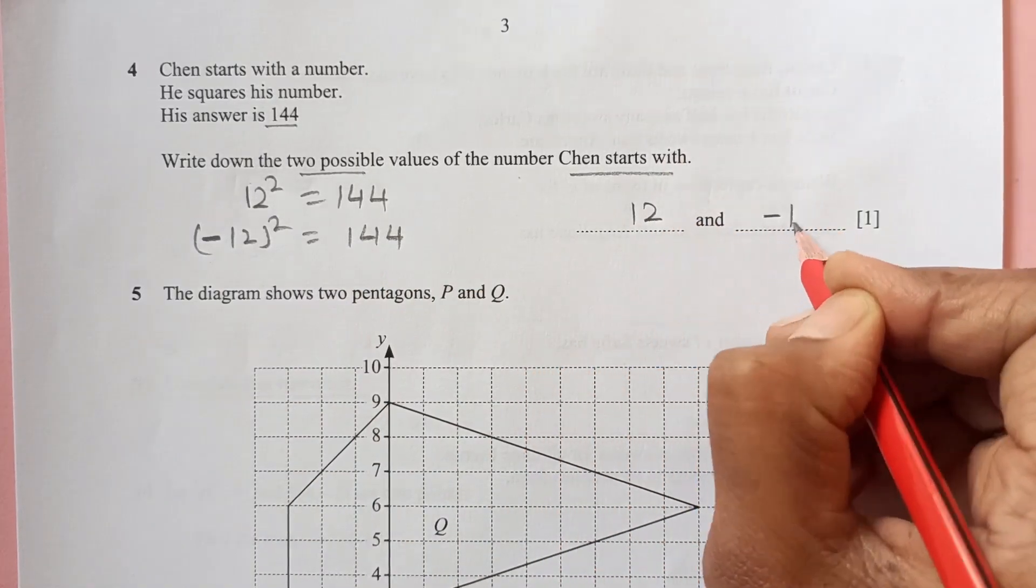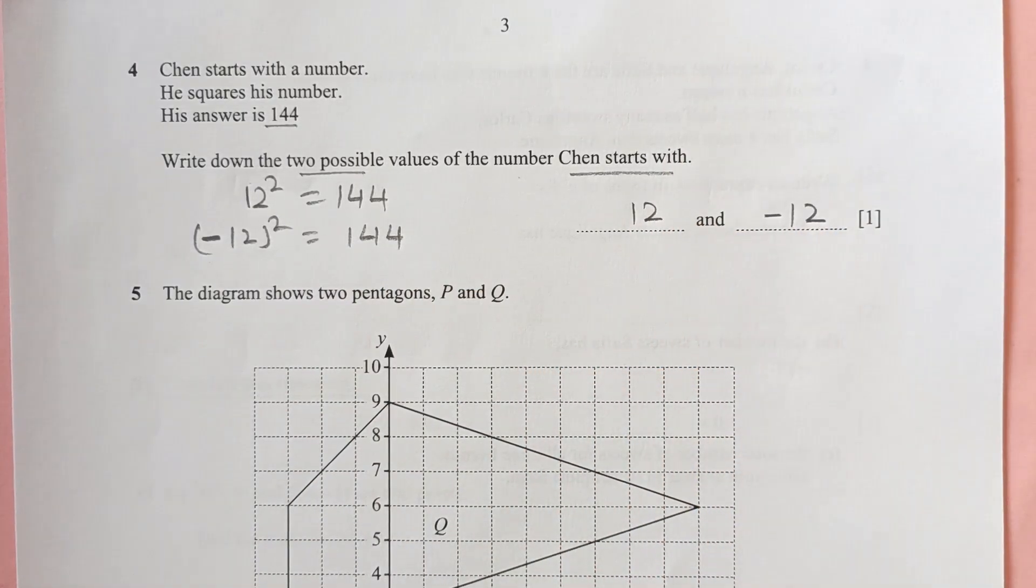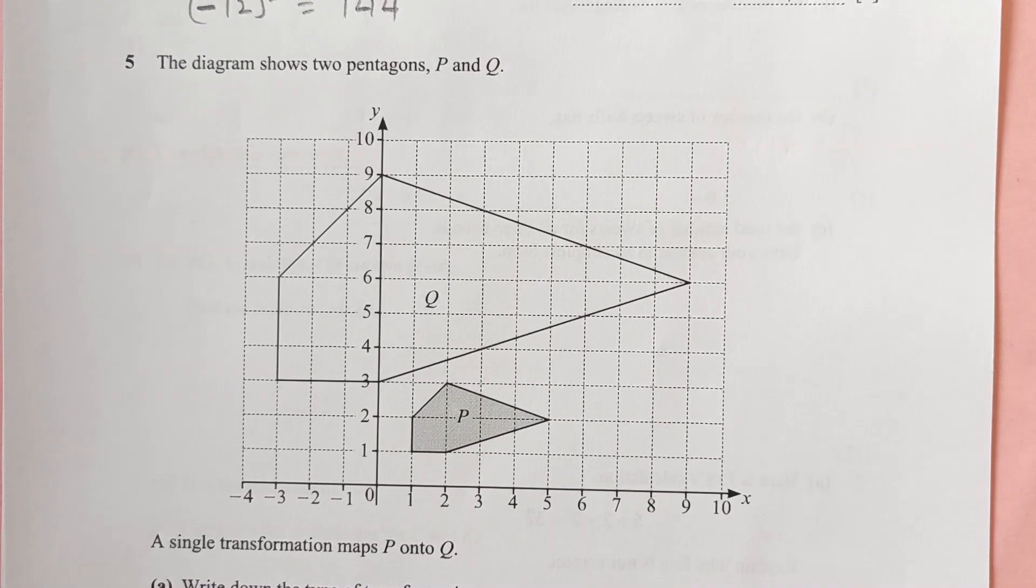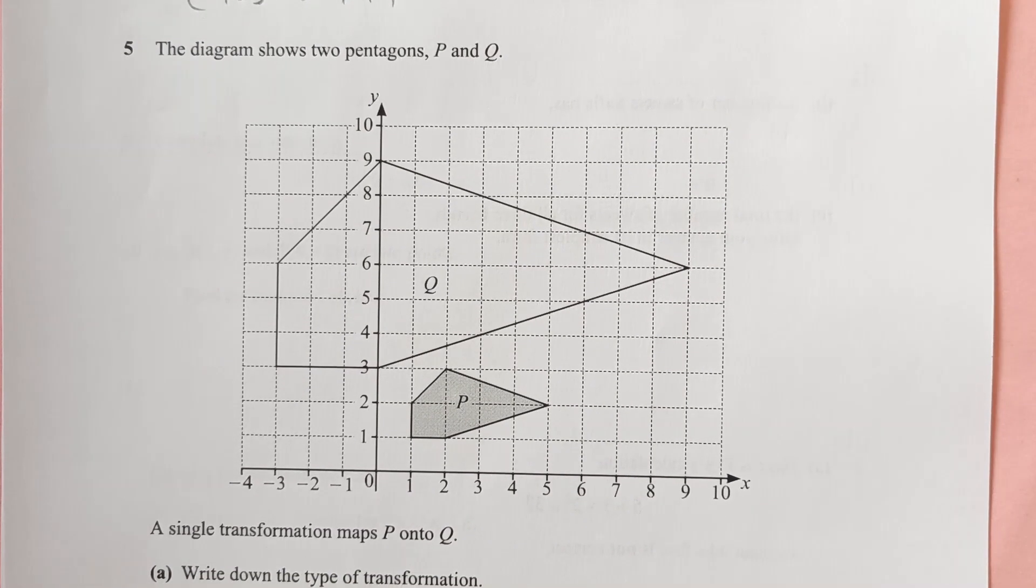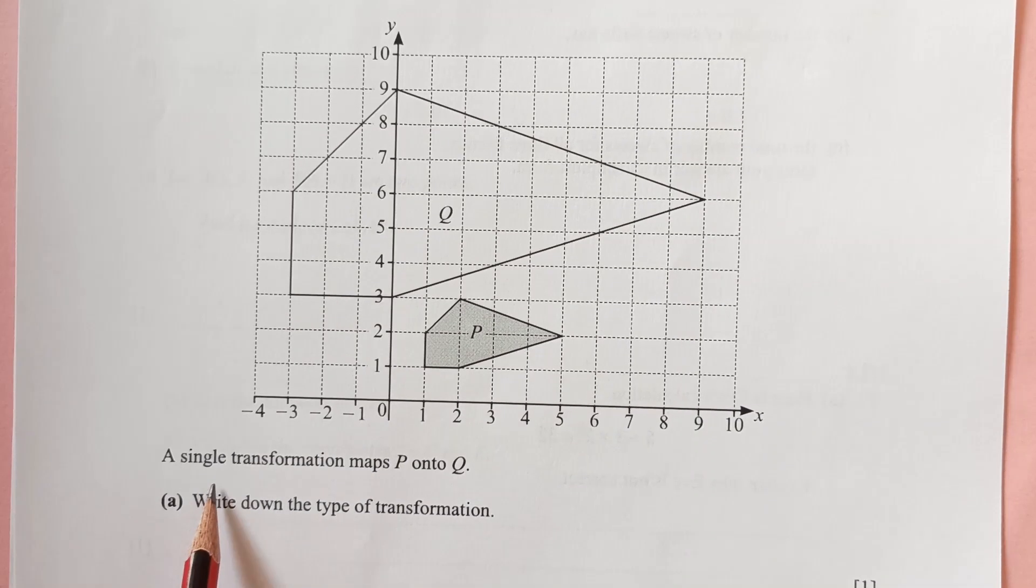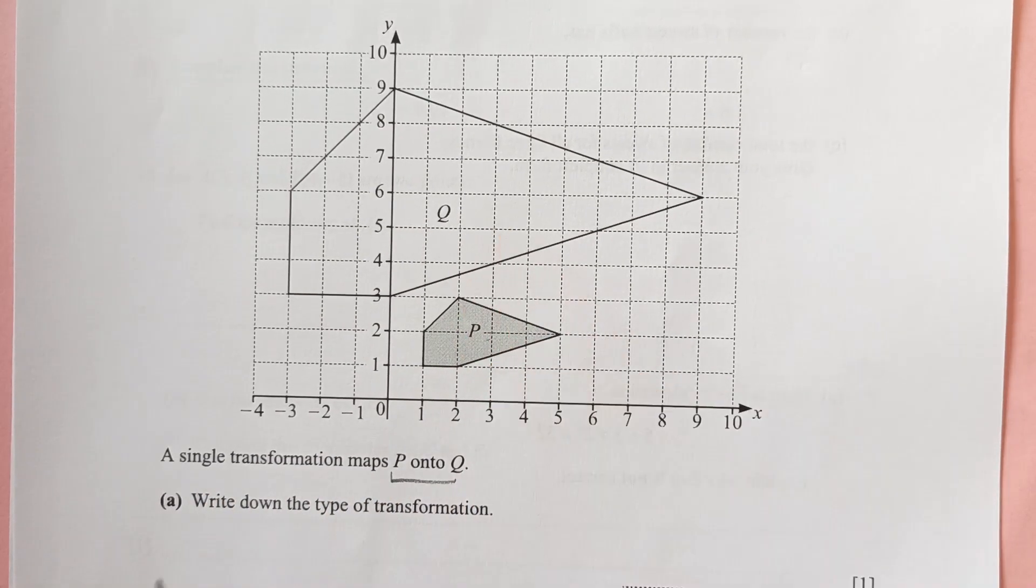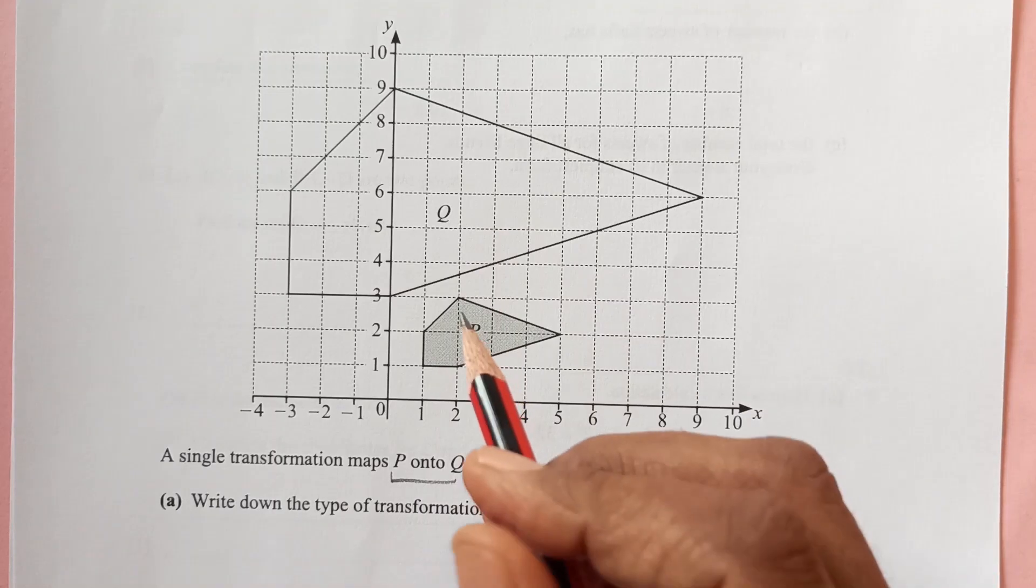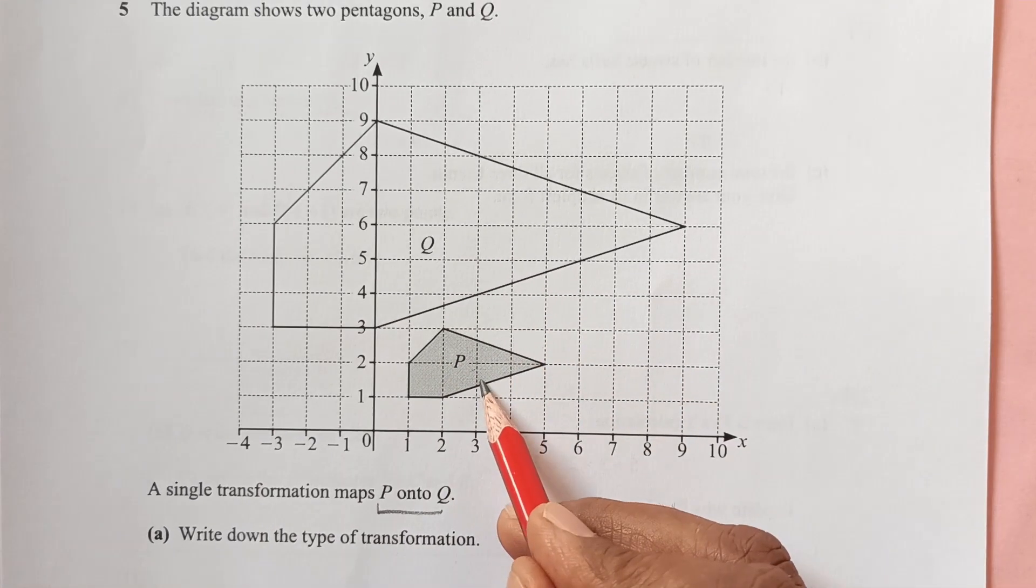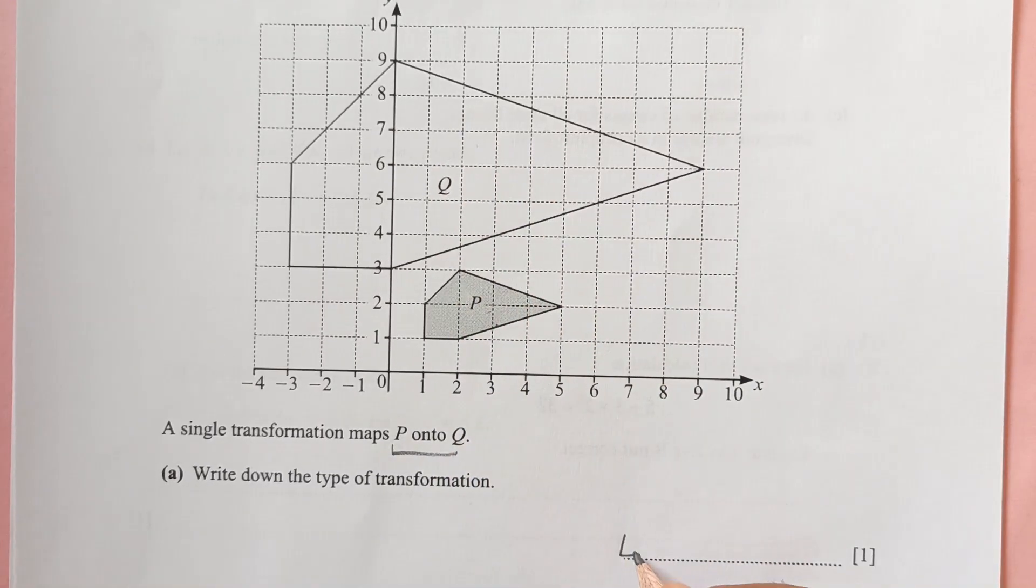Number five: the diagram shows two pentagons P and Q. We have two pentagons here. A single transformation maps P onto Q. Write down the type of transformation. If you see, this shape has been enlarged, so this is enlargement.